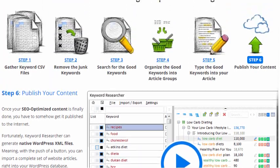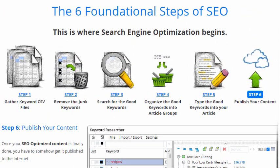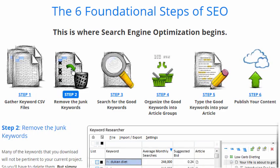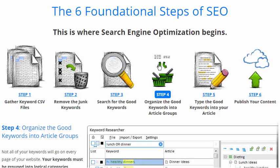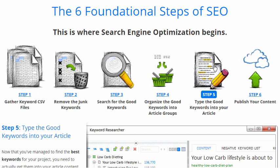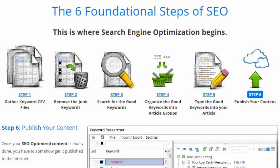Those are the six foundational steps of SEO, which you can check out on the Keyword Researcher website. No matter what tool you use, a typical day of SEO involves these six steps: find keywords, remove junk keywords, search for the good keywords, organize them into logical groups, write your article using these keywords, and then publish your content to the internet. Keyword Researcher was designed from the ground up to help with this entire process.